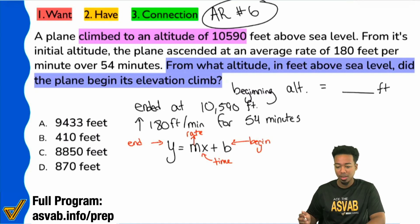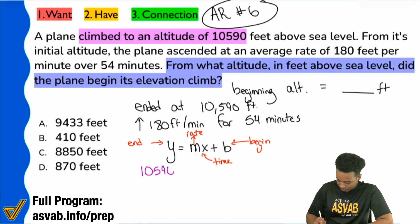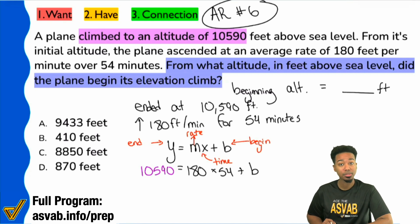And so watch this. We'll be able to go ahead right over here. We'll be able to say, our ending altitude was that 10,590. That was our ending altitude. And then we have our rate, which was given to us strictly as 180. And again, that was over a 54-minute period. And we're just trying to find what that beginning amount was. So notice, very straightforward. All we have to do now is do a little bit of multiplication, then subtract, and we're done.